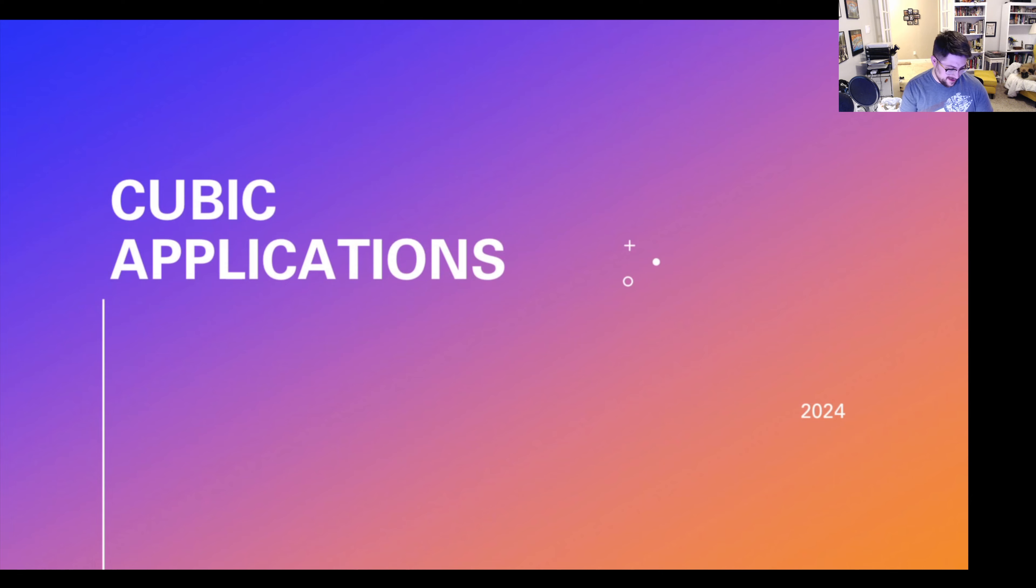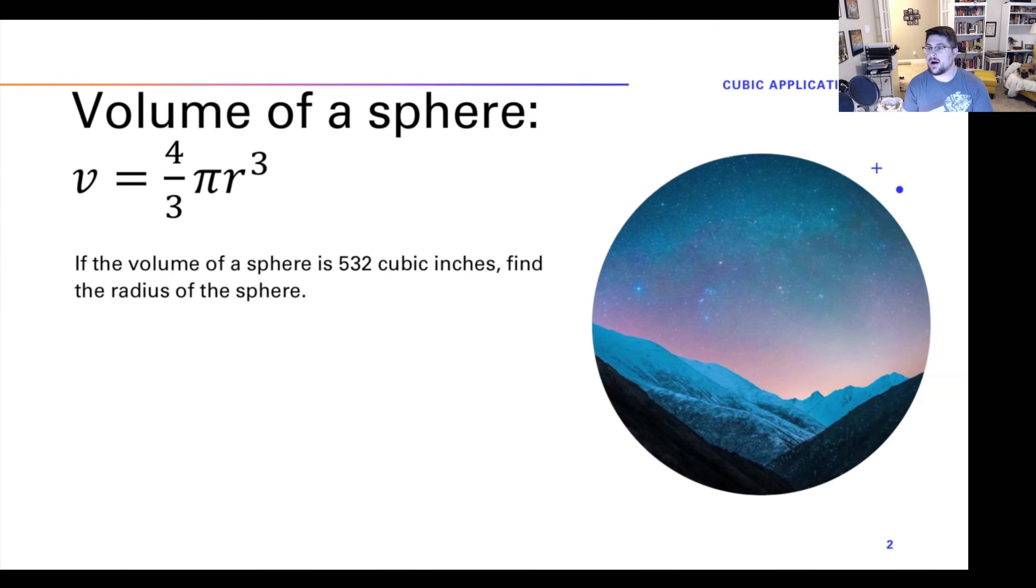Alright, so we are going to be talking about cubic application problems today, how to solve stuff that has cubes or cube roots, like word problems. Let's take a pretty simple problem that would be cubic. Things that are volumes, so volume of a sphere. The formula for that is V equals four thirds pi r cubed. Let's say that I know the volume of a particular sphere.